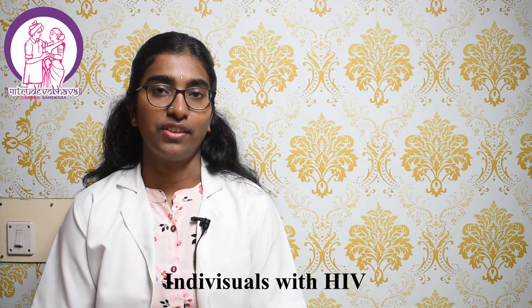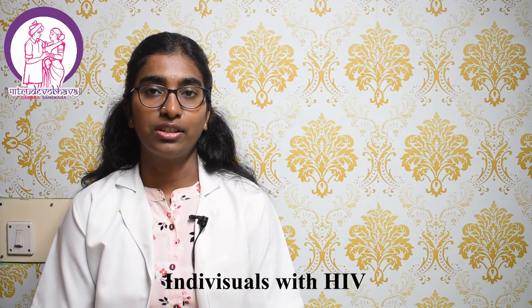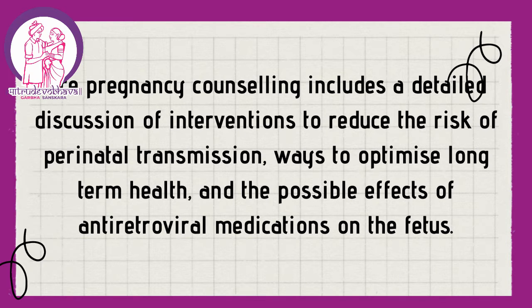The 13th important guideline is for individuals with HIV. People who are HIV positive should consider artificial insemination to achieve pregnancy if they are planning for pregnancy. It is essential for couples with HIV to undergo pre-pregnancy counseling, which includes a detailed discussion of interventions to reduce the risk of perinatal transmission, ways to optimize long-term health, and the possible effect of antiretroviral medications on the fetus.